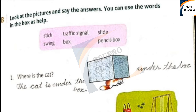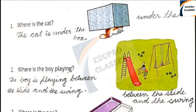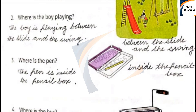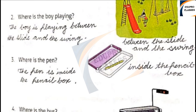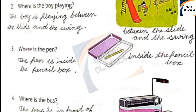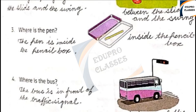Look at the pictures and see the answers. You can use the words in the box as help. The words given are: stick, traffic signal, slide, swing, box, and pencil box. Question 1: Where is the cat? The cat is under the box. Question 2: Where is the boy playing? The boy is playing between the slide and the swing. Question 3: Where is the man? The pen is inside the pencil box. Question 4: Where is the bus? The bus is in front of the traffic signal.